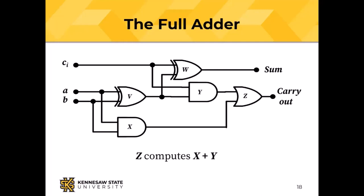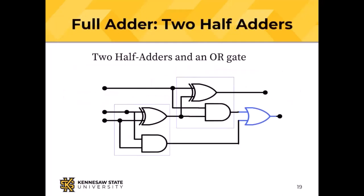There's another way to view the full adder: two half adders. The first half adder produces the sum and carry from A and B; the second half adder adds the carry-in to that result. An OR gate combines the two carry-outs. Five gates total — that's all it takes to do a one-bit binary addition including carry-in. That's why Tannenbaum said a computer that cannot add is unthinkable.